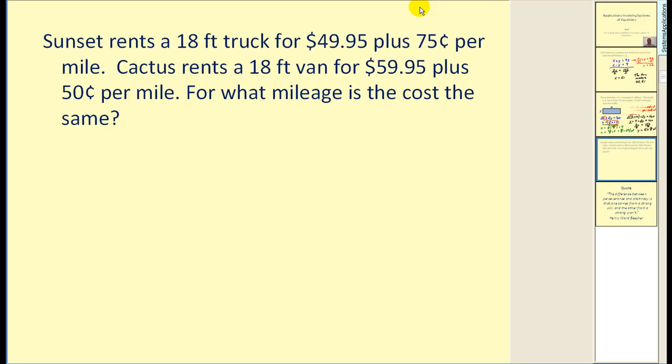Sunset rents an 18-foot truck for 49.95 plus 75 cents per mile. Cactus rents an 18-foot van for 59.95 plus 50 cents per mile. For what mileage is the cost the same? So we're going to have two cost equations, one for Sunset and one for Cactus. For our first equation, the cost C is equal to 49.95 plus 75 cents per mile. So we have a fixed cost of 49.95 and a variable cost of 75 cents per mile.